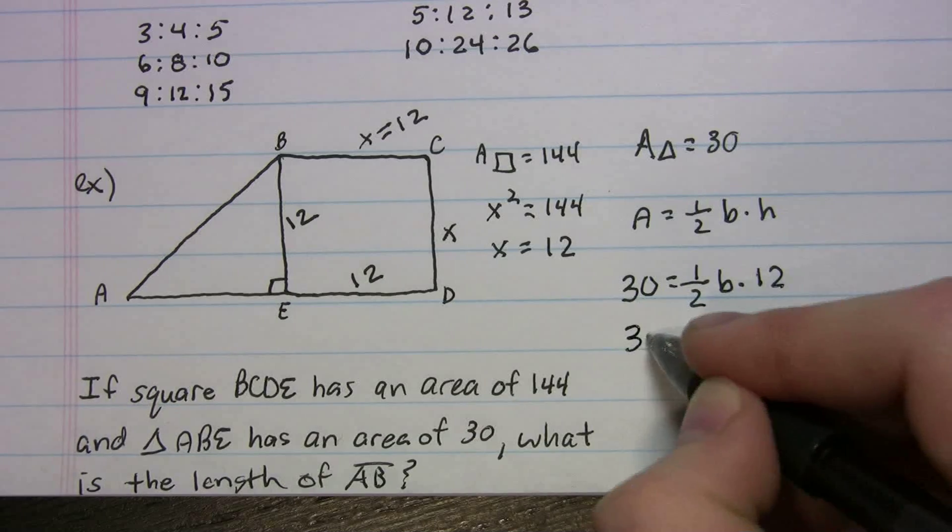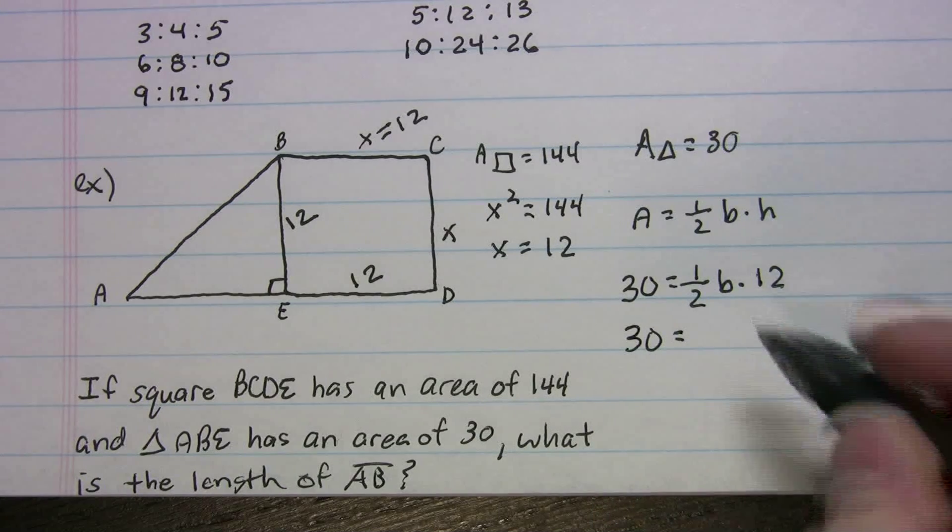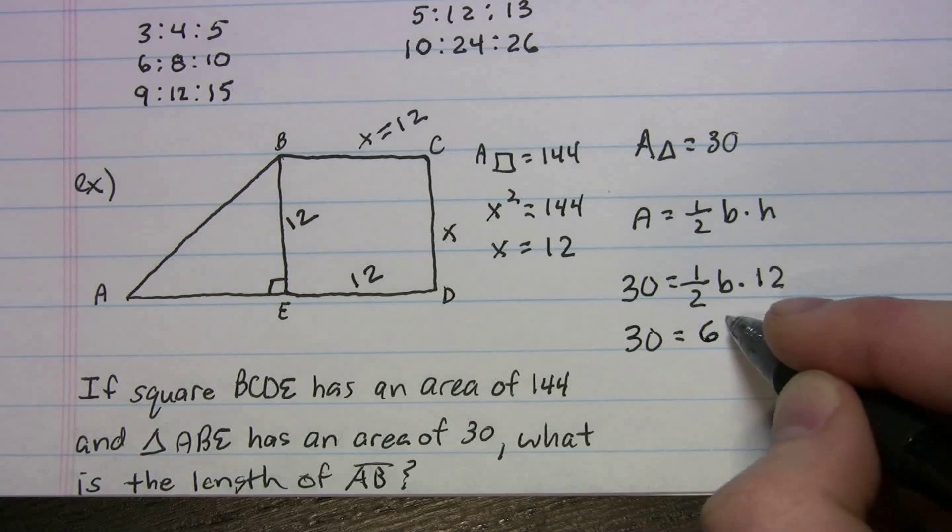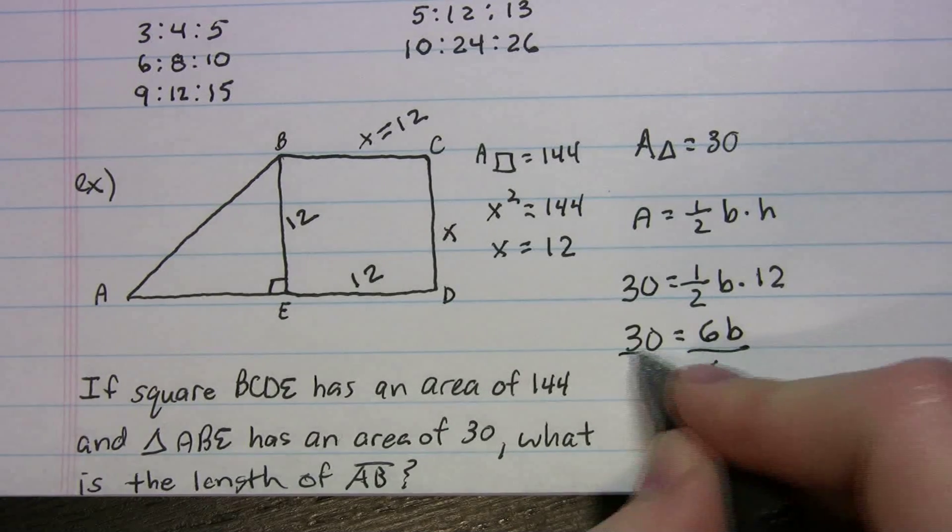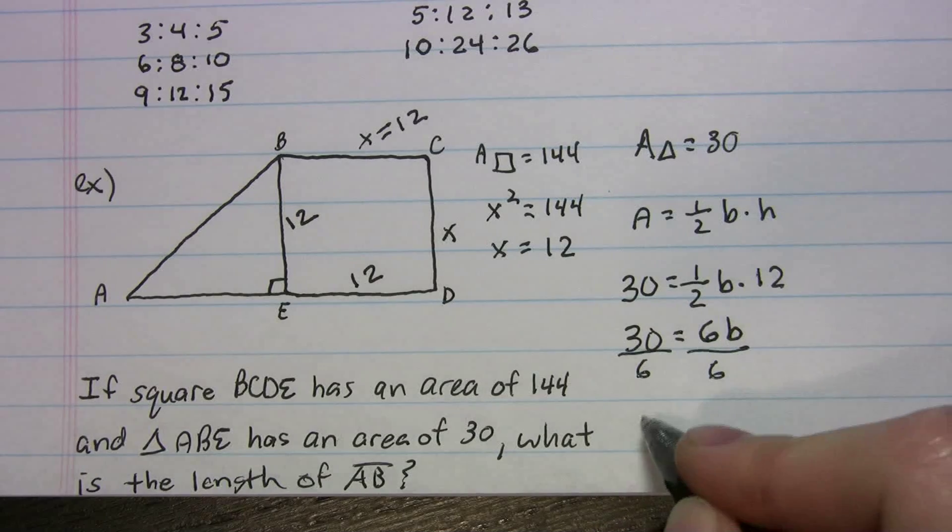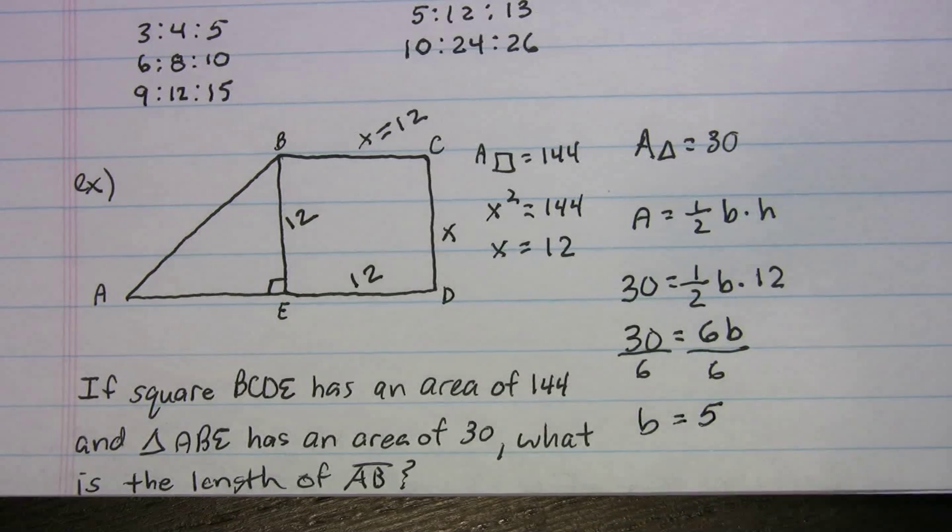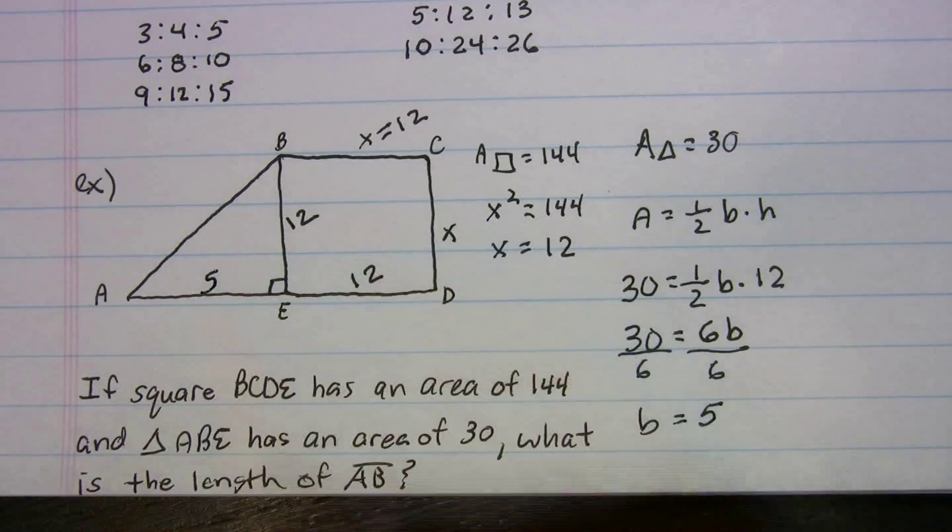So our equation is going to be 30 equals one half times 12, 6 times b, or 6b. Divide both sides by 6. Divide both sides by 6. And we get b is equal to 5. We'll plug that right in there.